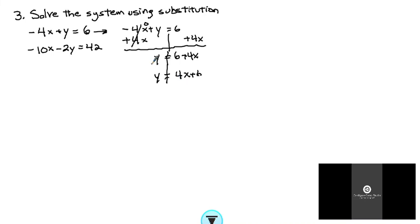So now I'm going to take my second equation, negative 10x minus 2y equals 42. And I'm going to take what y is equal to in terms of x, 4x plus 6.